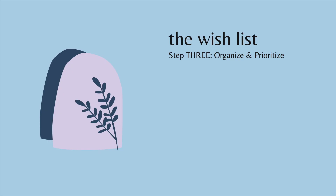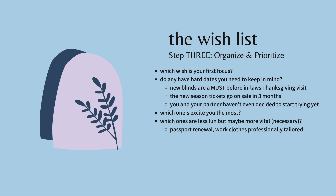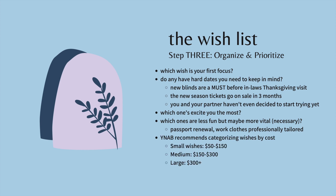Step three of the wish list is to organize and prioritize. Some questions to help you: Do you have any hard dates you need to keep in mind for any wishes? Maybe you know that tickets to the next season's games start to go on sale in three months — that's going to help you prioritize which come first. Which ones excite you the most, and which ones are less fun but may be more vital or necessary? YNAB recommends categorizing wishes by cost — small, medium, and large. In this example, small wishes are $50–$150 and large anything over $300, but this depends on your income.